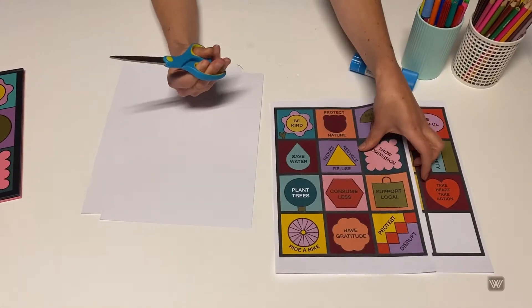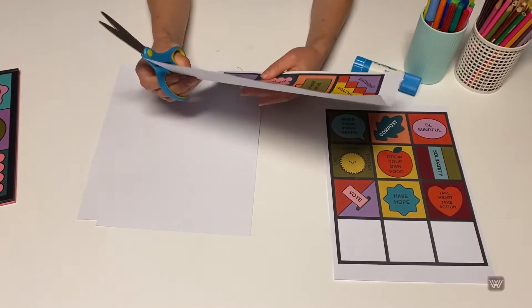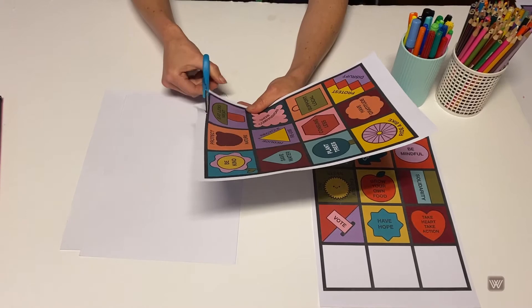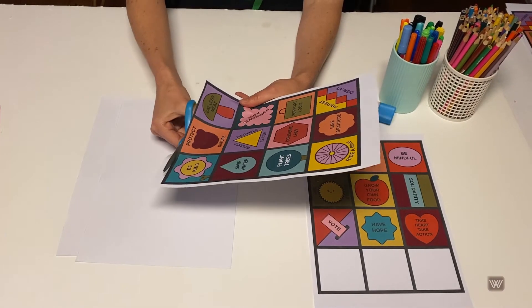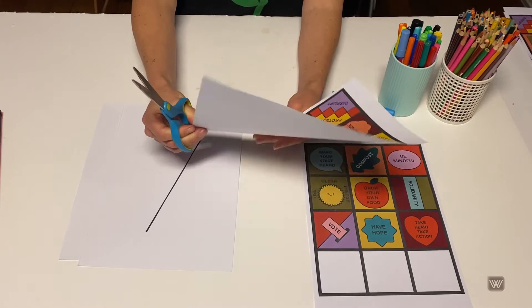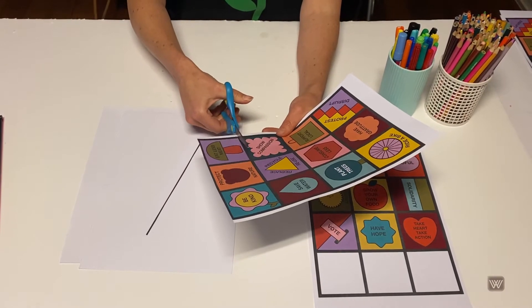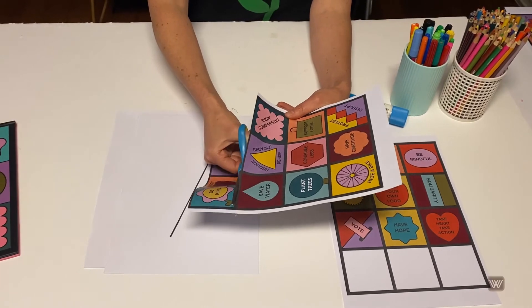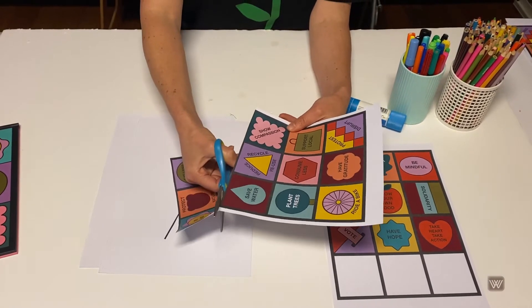So the first thing we need to do is just cut out the templates. Just to make it easy I'm just gonna cut out a few, but if you go through them and read them and then find the ones that are most important to you to include on your poster and do that.